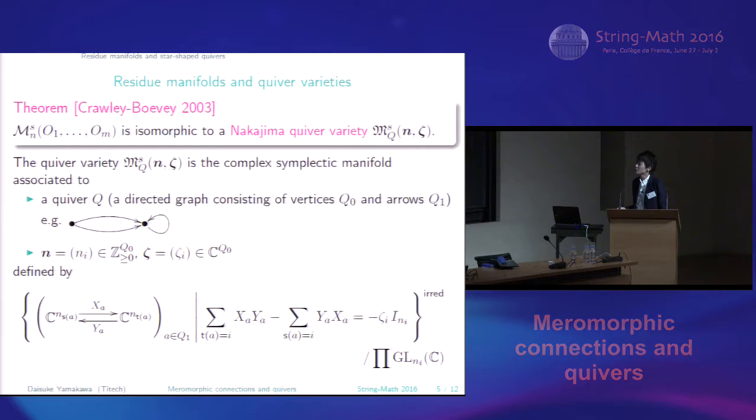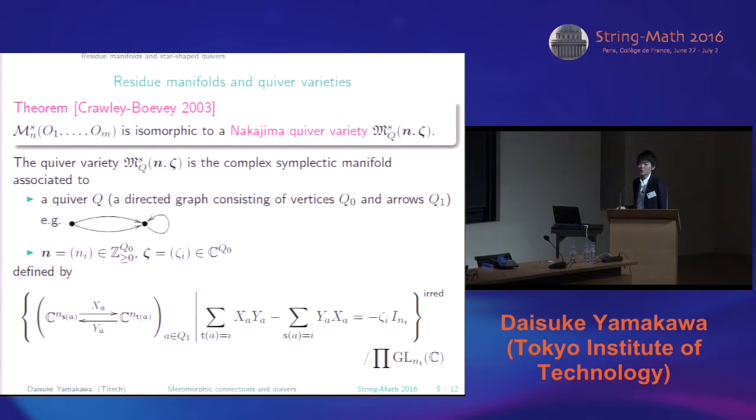The space of such tuples has a symplectic structure with canonical coordinates given by X and Y. And this space is acted on by the group, the product of GLNis by base change. This action is Hamiltonian with moment map given by this guy, the left-hand side of this relation. So this is the Hamiltonian reduction.